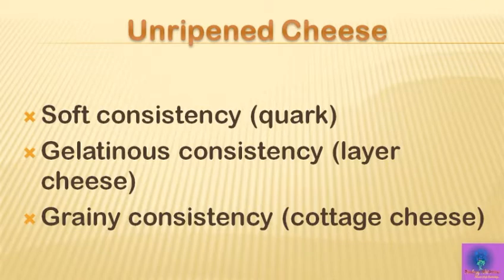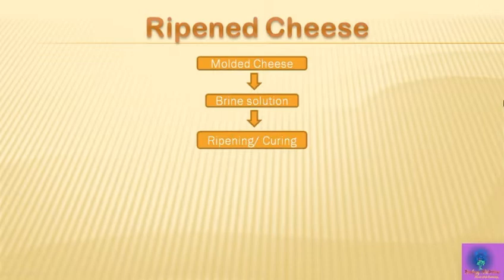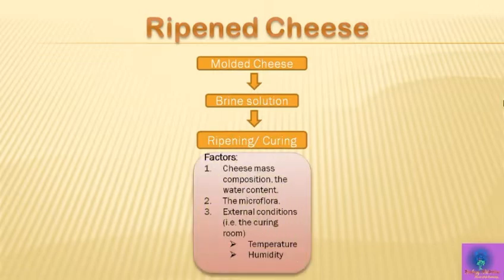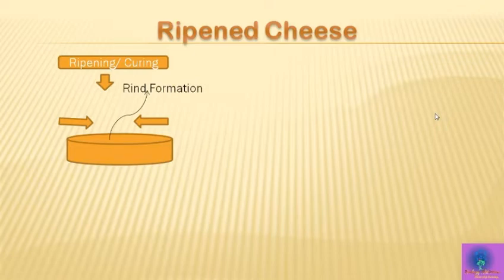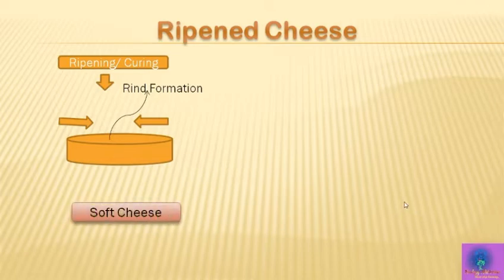In the case of ripened cheese, the molded cheese mass is placed in a salt bath, then dried and left to ripen in an air-conditioned room. Ripening or curing depends on cheese mass composition — particularly the water content — the microflora, and external conditions such as temperature and humidity. The ripening of soft cheese proceeds inward, so in early stages there is a ripened rind on the outer part and an unripened inner core. This non-uniform ripening is due to the high whey content, which causes increased formation of lactic acid and a pH drop at the start of ripening.